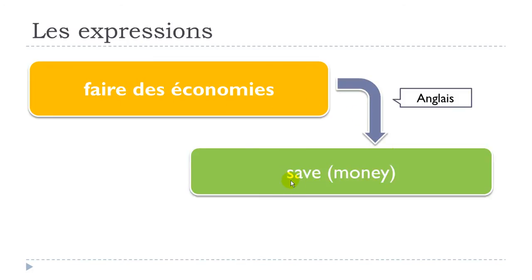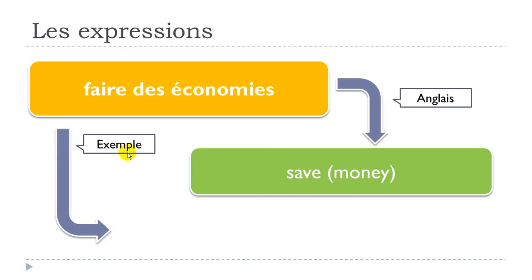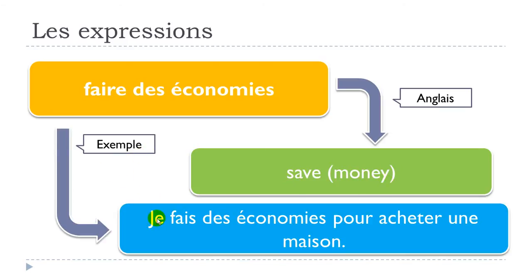The translation in English is 'to save money.' Here's an example: je fais des économies pour acheter une maison — I save some money to buy a house. Acheter means 'to buy' and une maison means 'a house.'